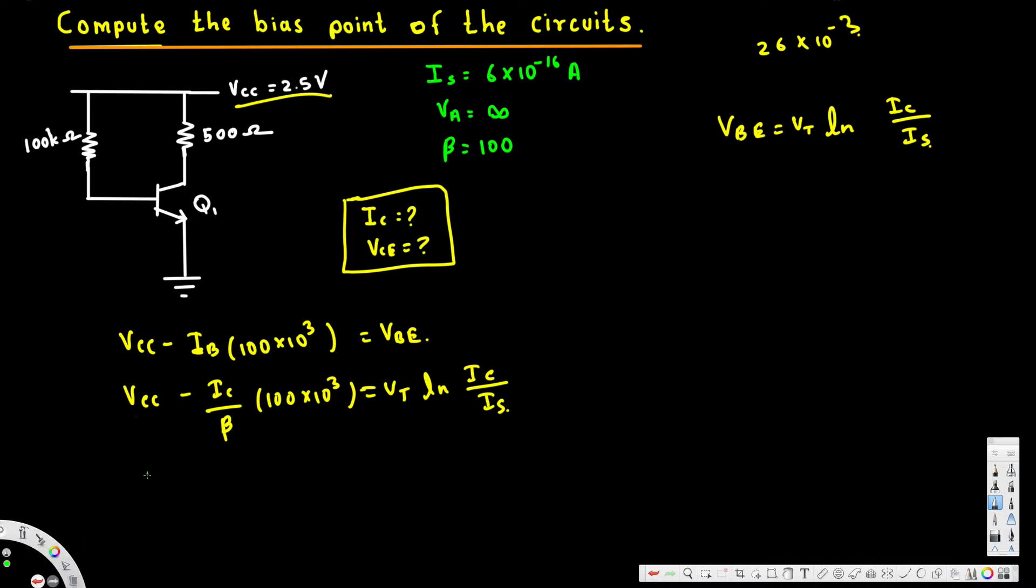First Vcc, that is 2.5 volts minus Ic over beta, where beta is equal to 100 times 100 times 10 to the power of 3.